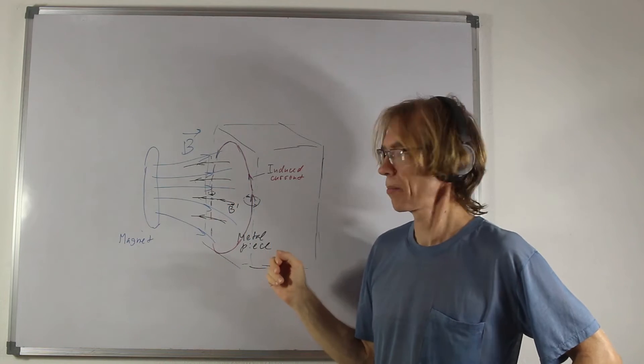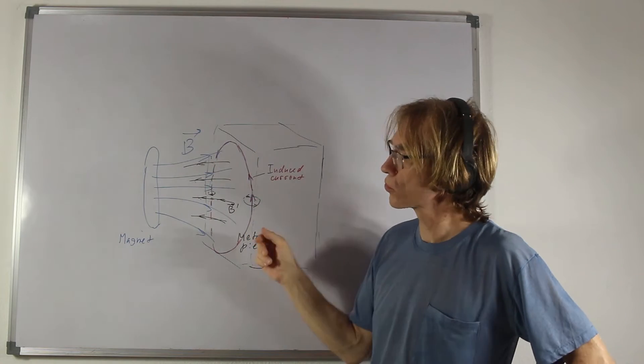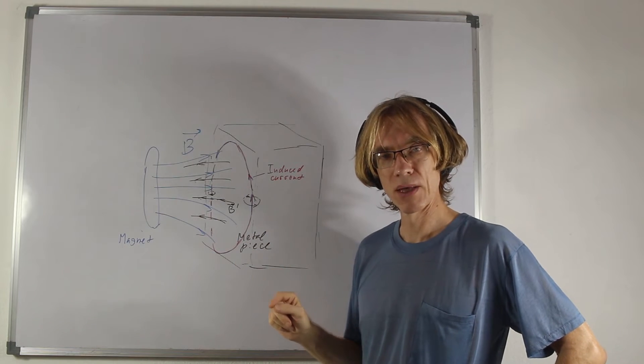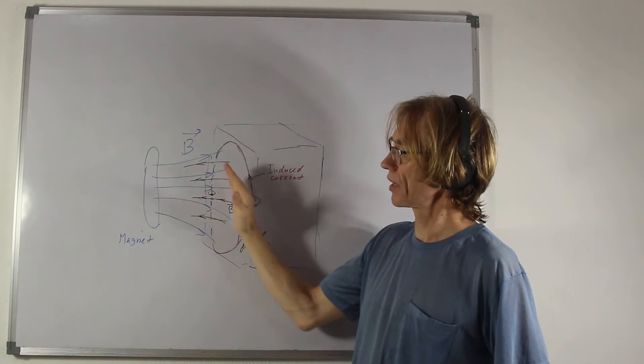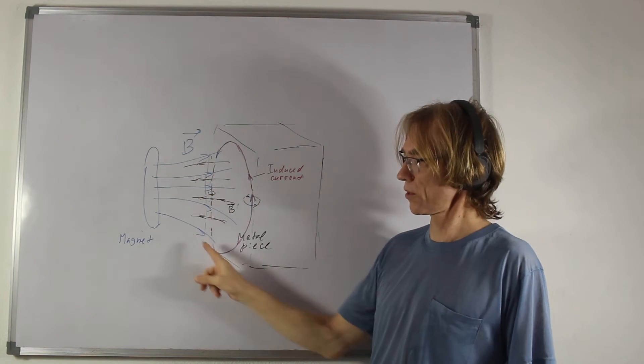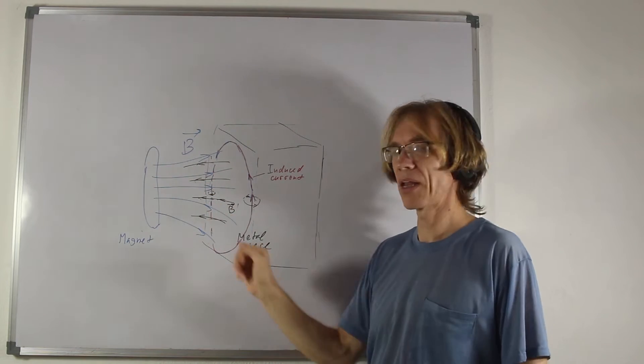So, for example, if I bring the piece of metal in, magnetic field generated would be just opposing the magnetic field of the magnet, repelling it.